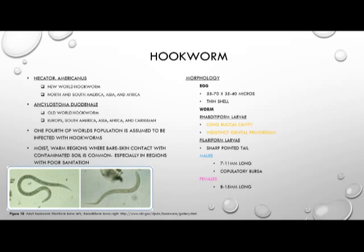One fourth of the world's population is assumed to be infected with hookworms, and they're commonly found in moist, warm regions where bare skin contact with contaminated soil is common, especially in regions with poor sanitation. The morphology of the egg is 55 to 70 by 35 to 40 microns with a thin shell. The rhabditiform larvae of both species have a long buccal cavity and an indistinct genital primordium.